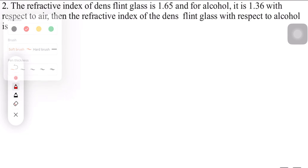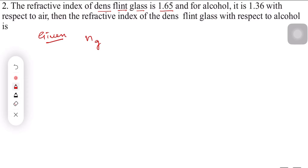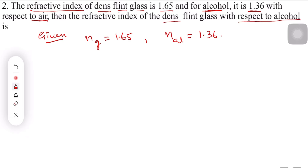Let's try another question. The refractive index of dense flint glass is 1.65. Let me denote it: ng = 1.65. For alcohol, the refractive index is 1.36, so n_alcohol = 1.36. Both of these are absolute refractive indices with respect to air. The question asks for the refractive index of flint glass with respect to alcohol.